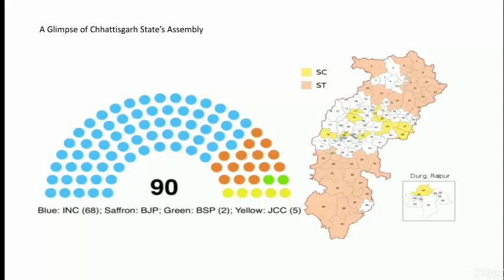Now let us see what happens after becoming MLAs. The 68 MLAs of the Indian National Congress elected one member as the Chief Minister. After elections, the MLAs belonging to the ruling party elect their leader, who becomes the Chief Minister. Here, Bhupesh Baghel was elected as the Chief Minister of INC. The Chief Minister then selects people to become other ministers for various departments and ministries.